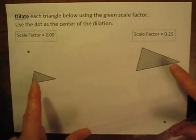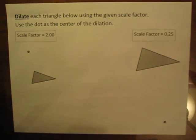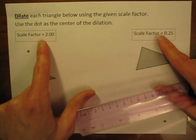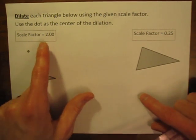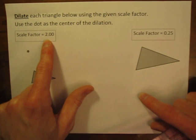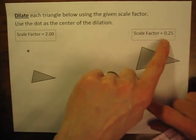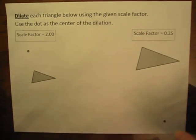Here, for dilations, the size will change. It will either grow or shrink depending on what the scale factor is. When the scale factor is greater than 1, the object will be growing. When the scale factor is less than 1, the object will be shrinking.